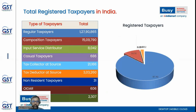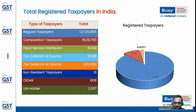On screen you can see data on total registered taxpayers in India. Regular taxpayers were 1 crore 27 lakh 90,865; composition taxpayers were 15 lakh 9,790; Input Service Distributors were 8,042; Tax Collectors at Source were 21,166; non-resident taxpayers were 31; OIDAR were 606; and UIN holders were 2,307. This data is shared just for our knowledge about how many taxpayers are registered in India's taxation system.